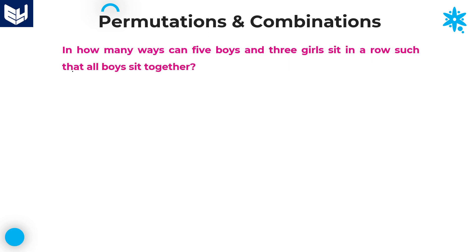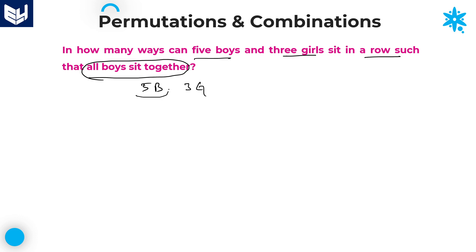The next question: in how many ways can 5 boys and 3 girls sit in a row such that all boys are sitting together? If all boys sit together, take all 5 boys as a single entity. Because according to the condition, all boys must sit together with no girl between them. So all 5 boys are taken as one single entity along with 3 girls — total 1 plus 3 equals 4 members, which can be arranged in 4 factorial ways.